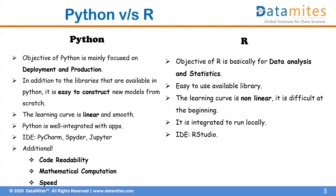Python is well integrated with cloud-based applications like Amazon AWS and Microsoft Azure. R, however, is integrated to run locally — it is restricted to a local machine and does not support cloud or server-based environments. R uses the RStudio IDE, whereas Python is supported by many IDEs including PyCharm, Spyder, and Jupyter.